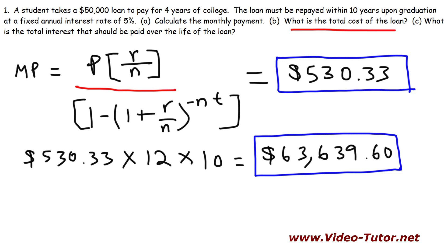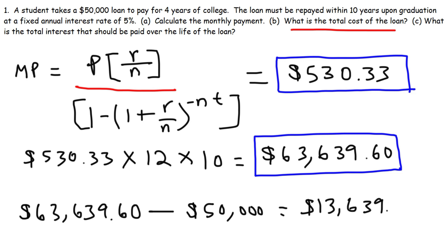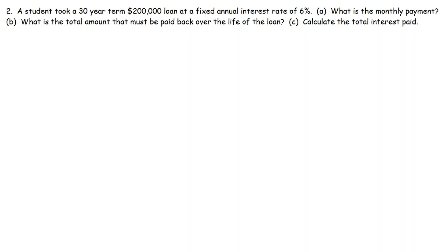Now, what is the total interest that should be paid over the life of the loan? It's going to be the difference between the total amount that was repaid minus the original loan value, which is $50,000. So that's going to be $13,639.60. So that's the amount in pure interest that the student will pay for this loan. Now, let's look at number two.